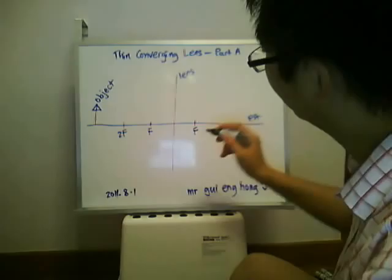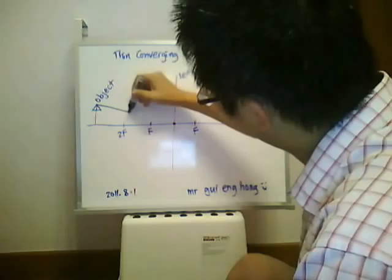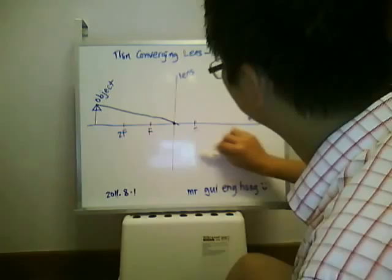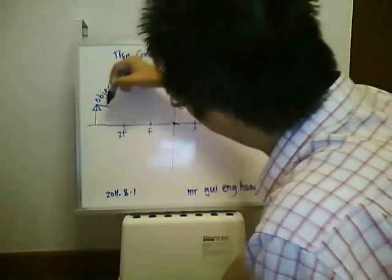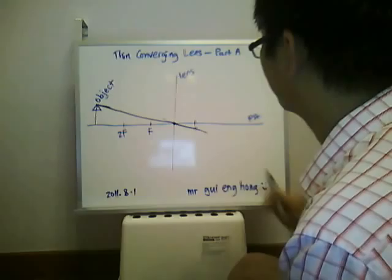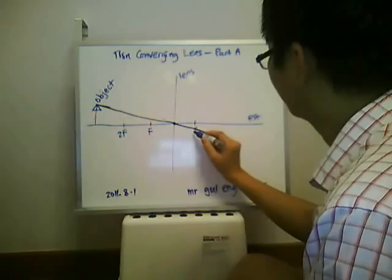The first ray is always drawn through the center of the lens and it does not bend — it goes straight through. You have to use a ruler to draw a straight line. This is a light ray. The focal point is this point here.